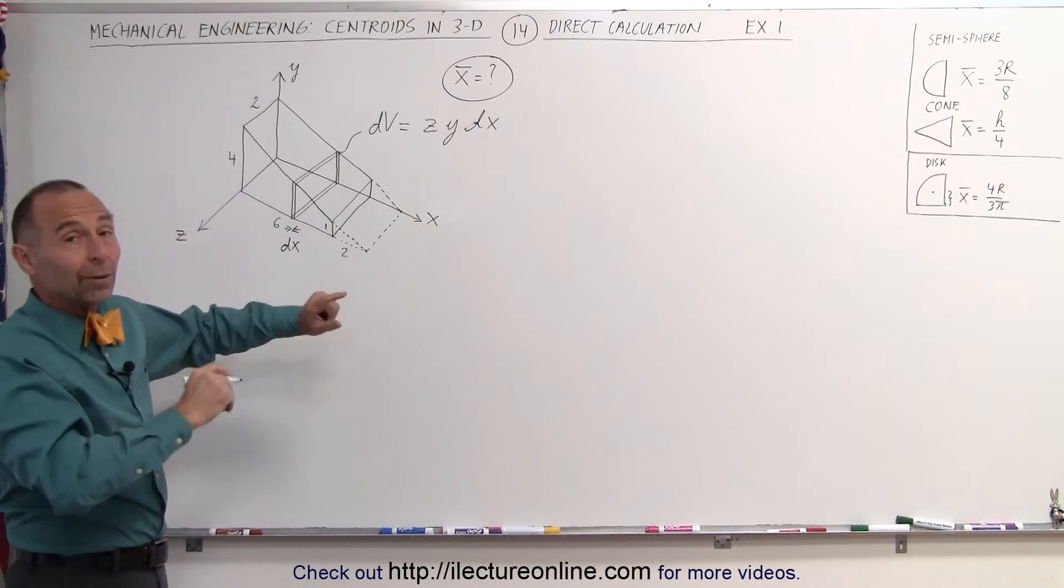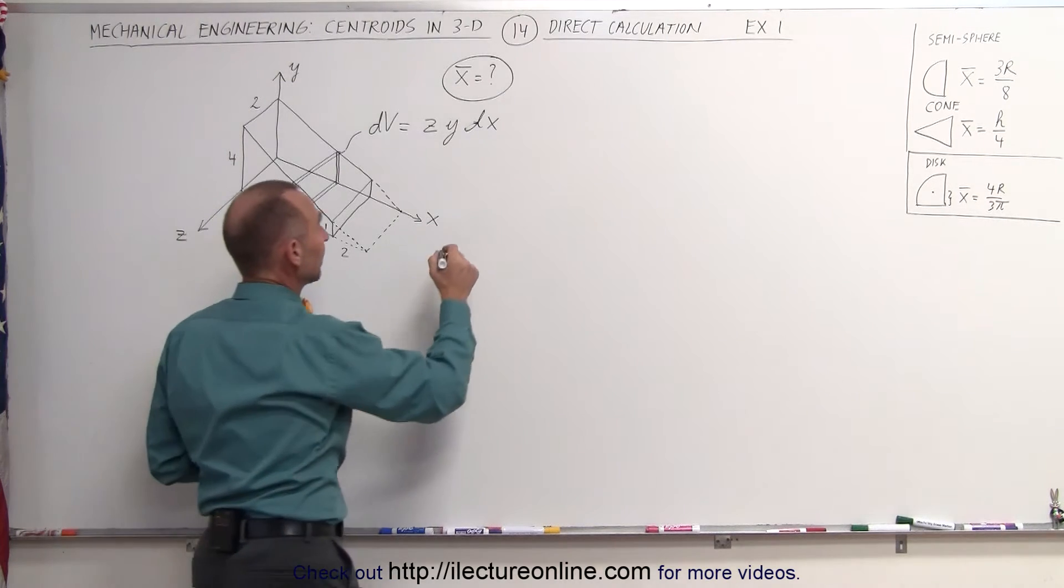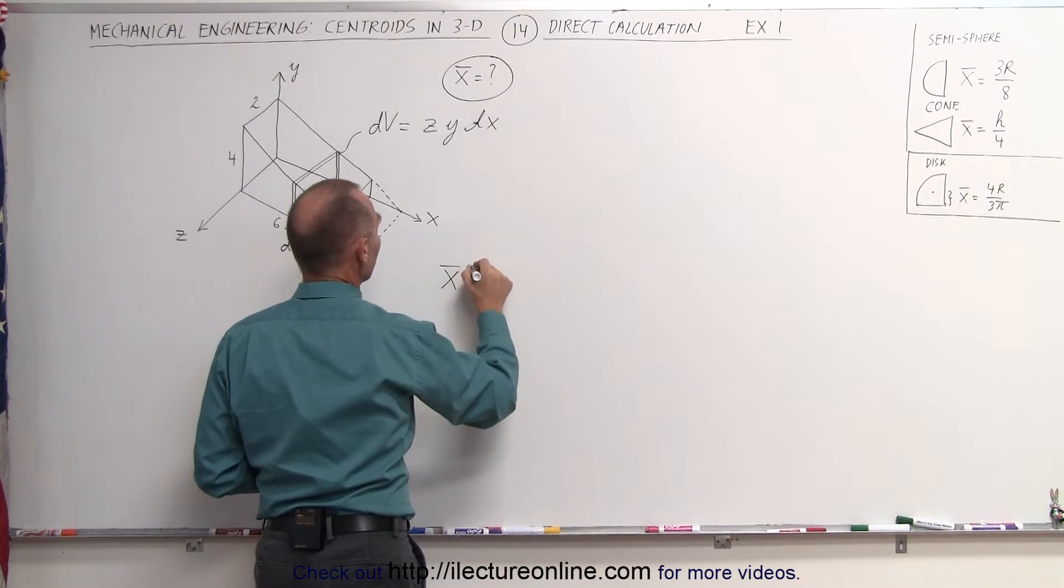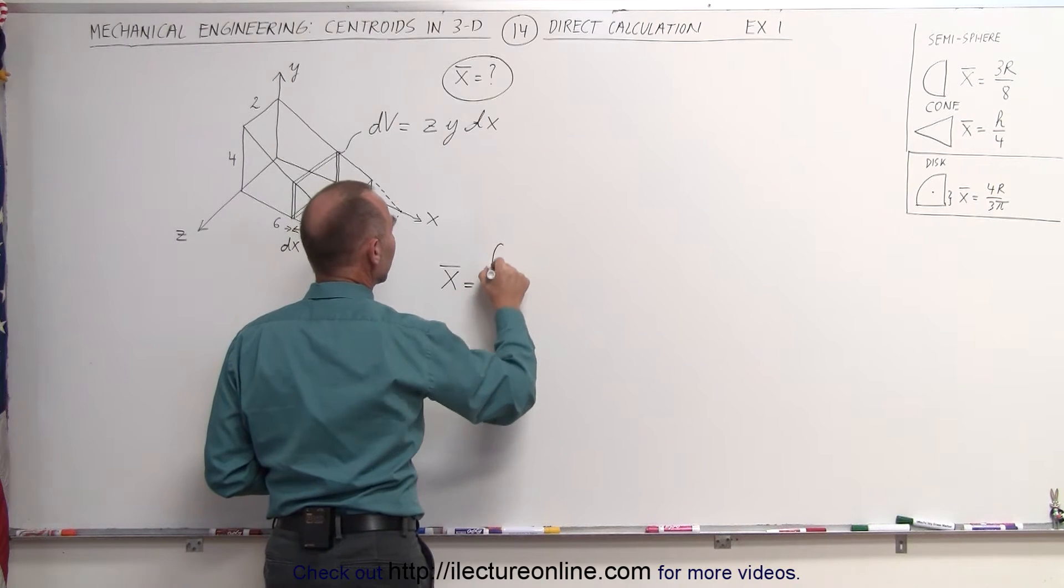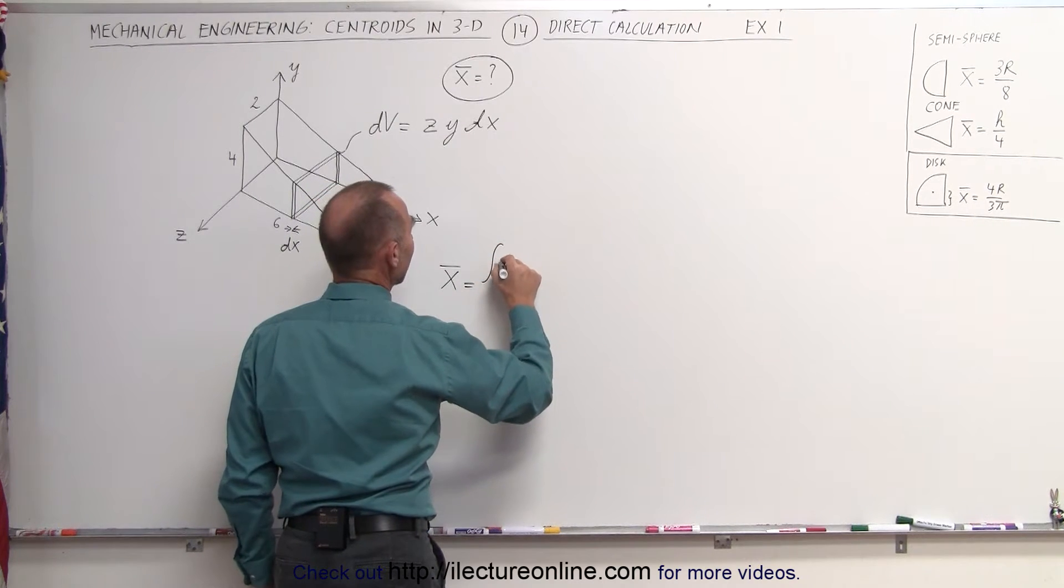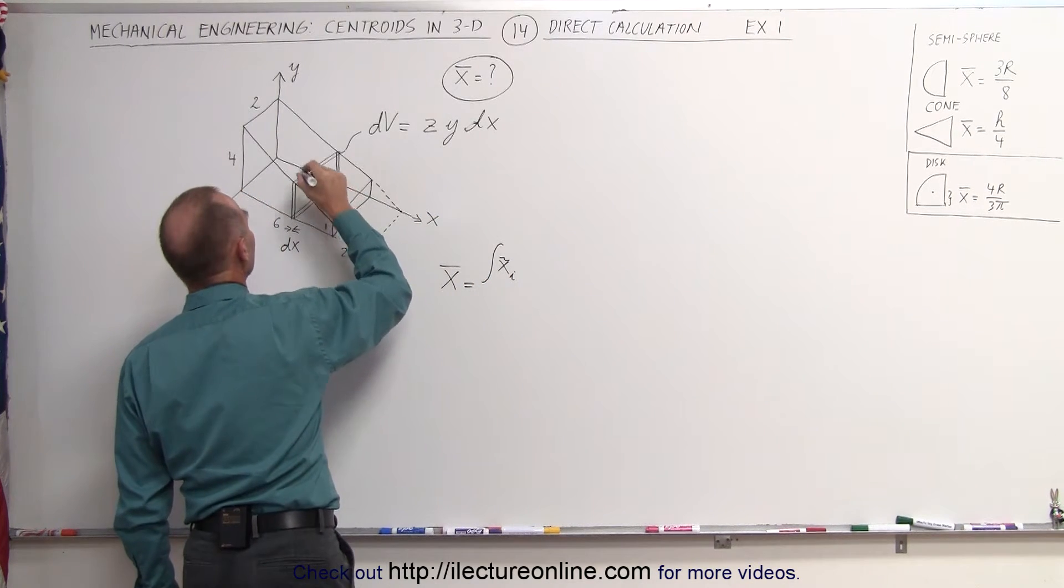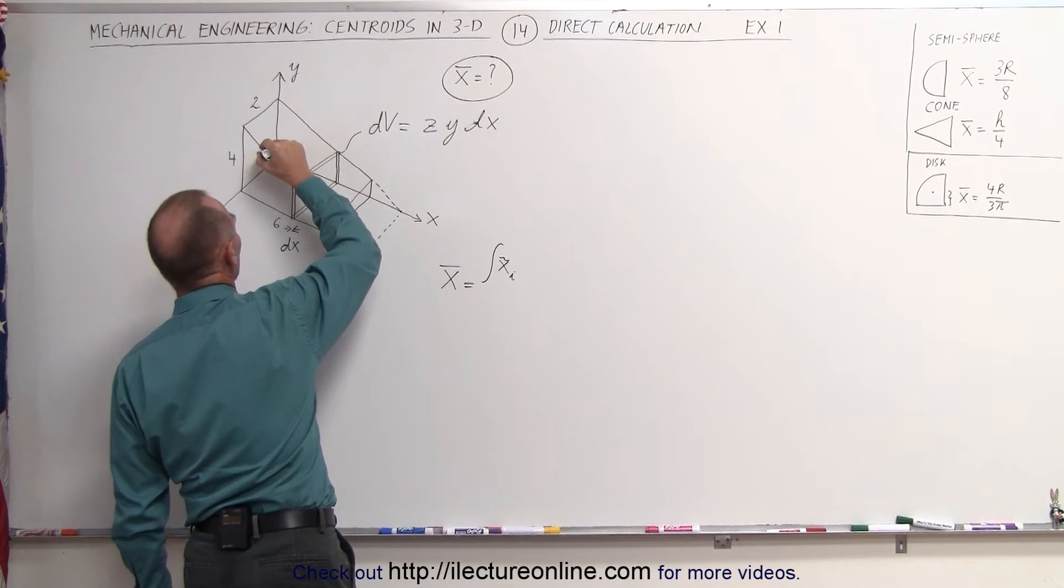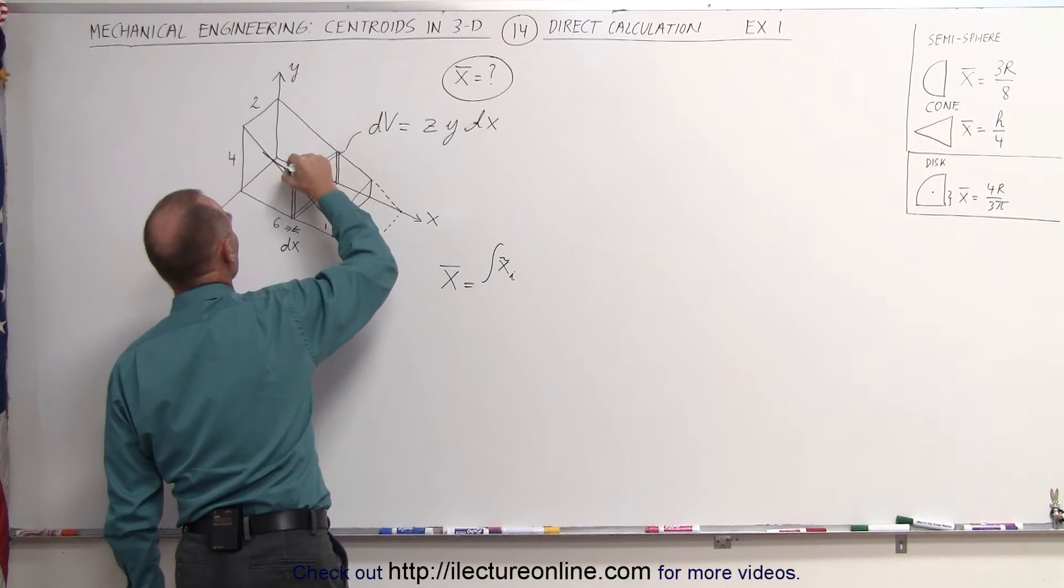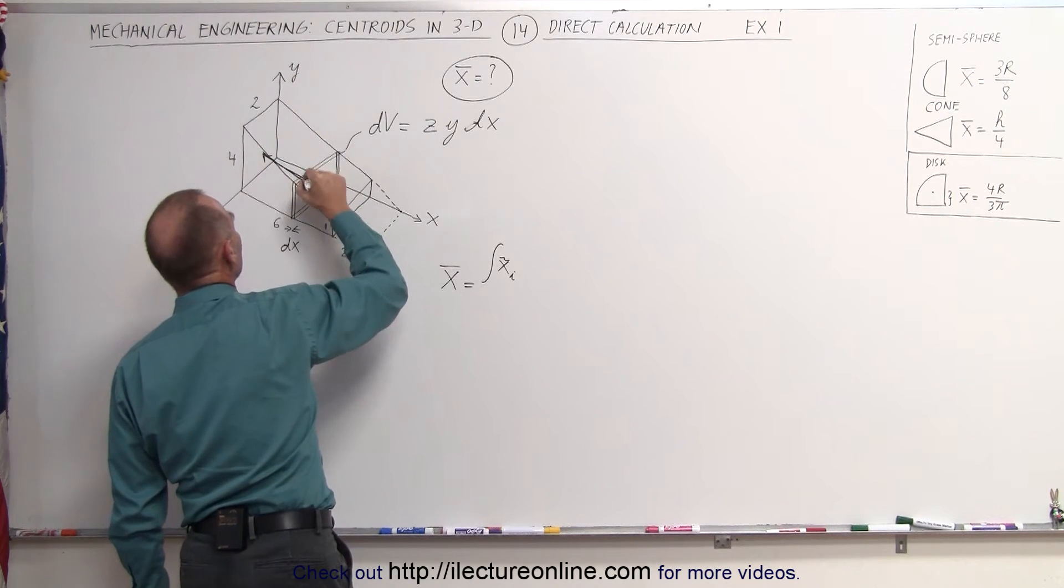We know that ultimately the equation to find the x-coordinate of the centroid is equal to the integral of the x-coordinate of each individual little piece, so this would be the x-coordinate right there, that would be distance x away from the origin. This distance right here would be equal to x.